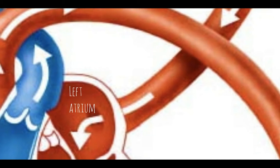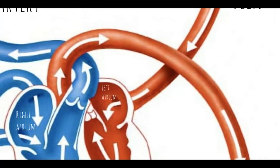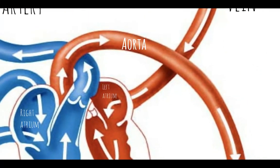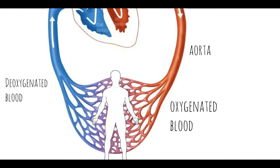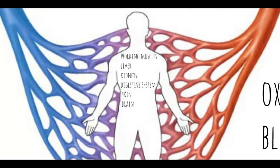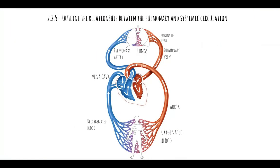It travels through the bicuspid valve into the left ventricle, then leaves the heart in the aorta. Oxygenated blood then travels to the systems in the body, including the working muscles, the liver, the kidneys, digestive system, skin, and brain.